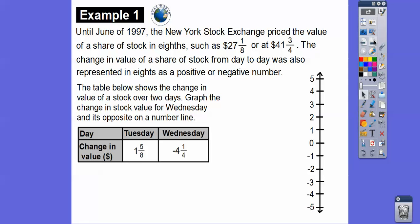Here's a word problem: until June of 1997, the New York Stock Exchange priced the value of shares of stocks in eighths — for example, $27 and 1 eighth or $41 and 3 fourths. The change in value of a share of stock from day to day was also represented in eighths as positive or negative numbers. This table shows the change in value of stocks over 2 days, from Tuesday to Wednesday. We're going to graph the change in stock values for Wednesday and its opposite on the number line.